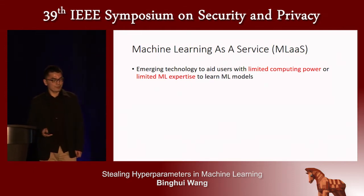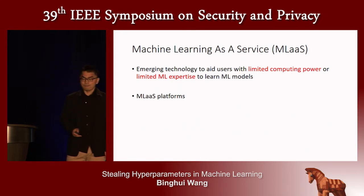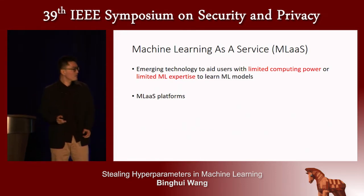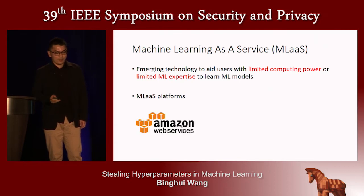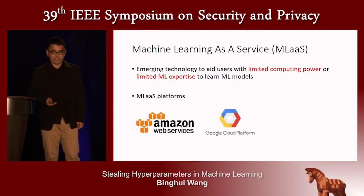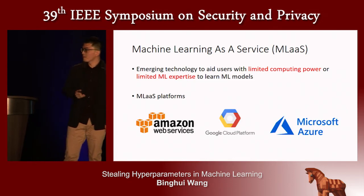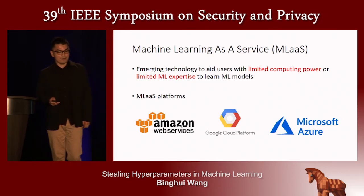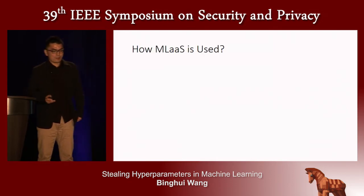Several machine learning agents deploy machine learning as a service platforms. For instance, Amazon deploys Amazon Web Service, Google deploys Google Cloud Platform, and Microsoft deploys Microsoft Azure.